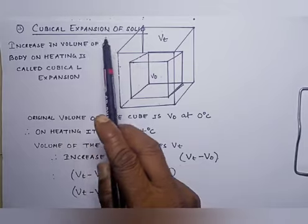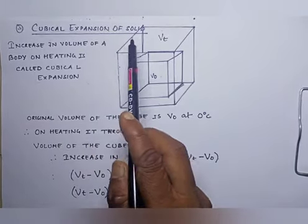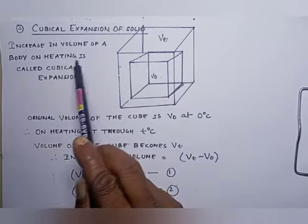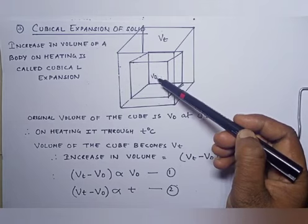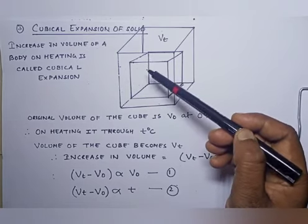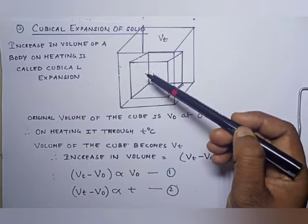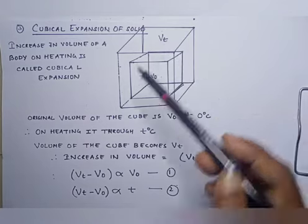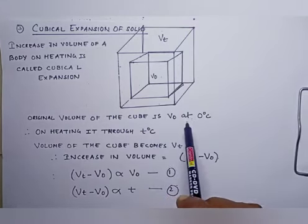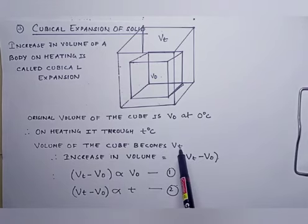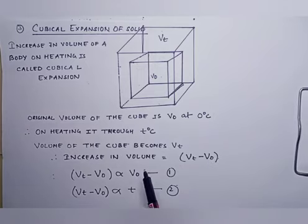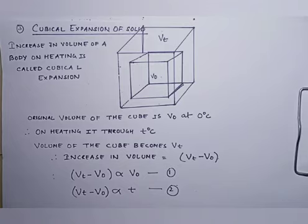Let us move to the third topic: cubical expansion of solid. Increase in volume of a body on heating is called cubical expansion. The original cube has volume V0. When heat is applied, the length, breadth and height all three increase, so the volume becomes Vt. Therefore the original volume of the cube is V0 at 0 degree Celsius. On heating it through T degree Celsius, the volume becomes Vt. Therefore increase in volume equals Vt minus V0. Change in volume is directly proportional to original volume and change in temperature.